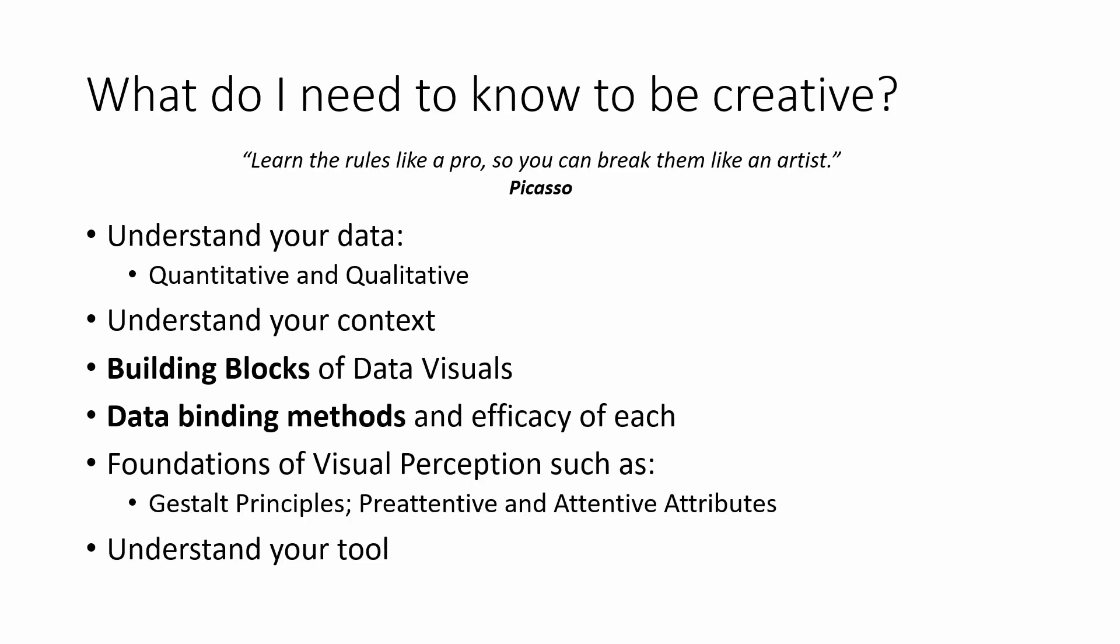So what do I need to know to be creative? I'll quote here, which I mentioned before. So it's good to learn the rules like a pro so you can break them like an artist. To be creative, we need to have that knowledge. So we need to understand our data and our data types, so the differences between quantitative and qualitative data. We need to understand the context. So starting a visualization without clarifying why it matters to the audience before we start is a recipe for failure. It helps to have a memory of the building blocks of data visuals too. So data binding and data encoding methods and an understanding of the efficacy of each. Also an understanding of the foundations of visual perception, such as Gestalt principles, pre-attentive and attentive attributes. And understanding our tool, right? So we've got to master our tool and know how to work it with as much depth as necessary.